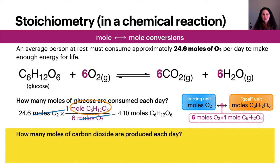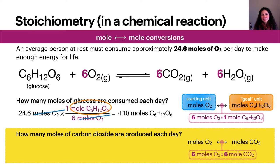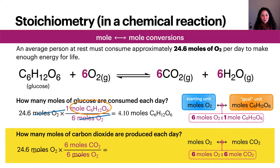Now you try. Begin to plan the strategy for this next question, then find the solution using dimensional analysis. The strategy here is to convert between units of moles of dioxygen to units of moles of carbon dioxide. We can perform this conversion with just one conversion factor: the stoichiometric relationship of six moles of dioxygen to six moles of carbon dioxide. When we start with 24.6 moles of dioxygen and use the six-to-six ratio as a conversion factor, we find that 24.6 moles of carbon dioxide are produced.